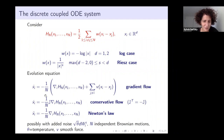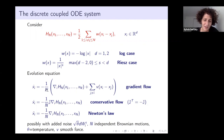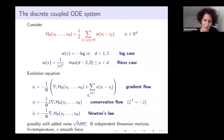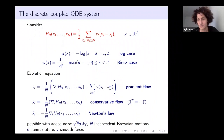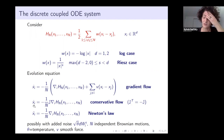Either we consider a gradient flow where the velocity of each particle is the opposite of the gradient of the energy of all particles, with a mean-field scaling dividing by n—so it's the average force generated by the other particles. In the gradient flow case, you can also add a smooth force V. This is just for generality.